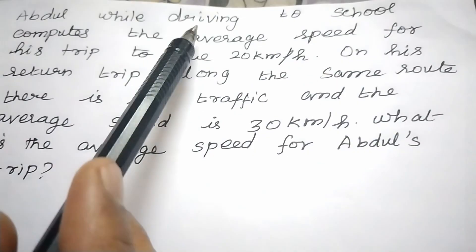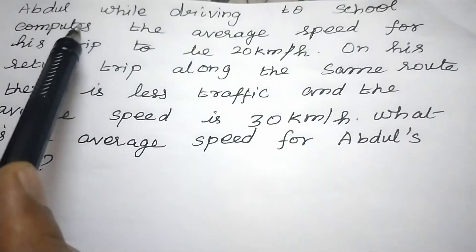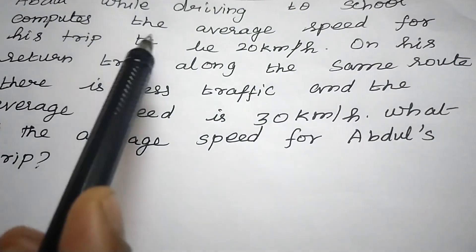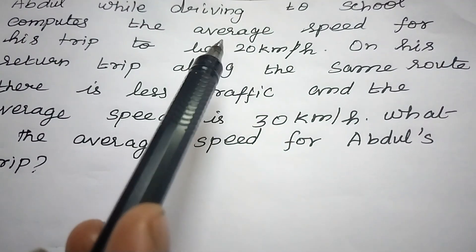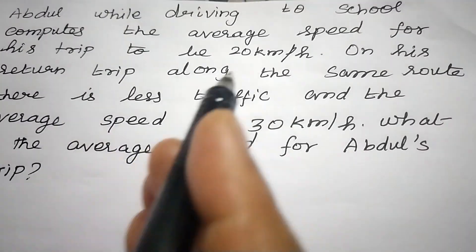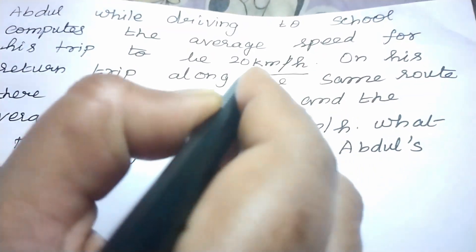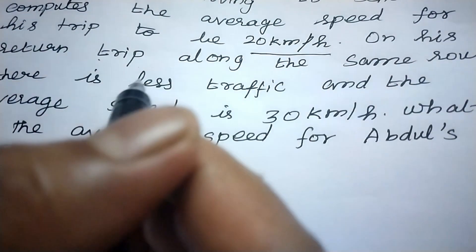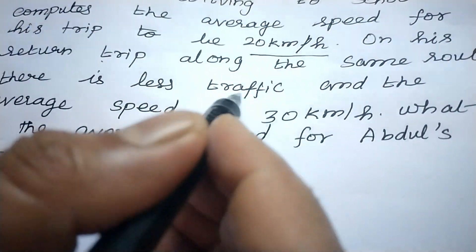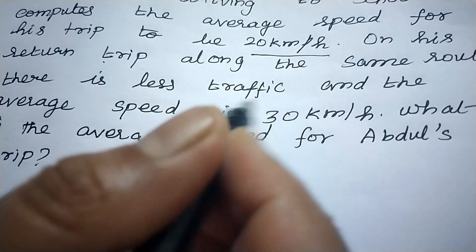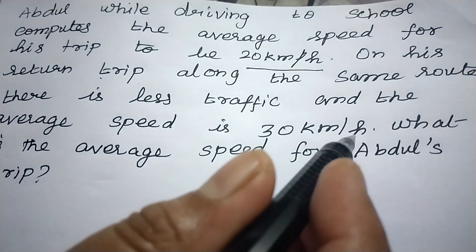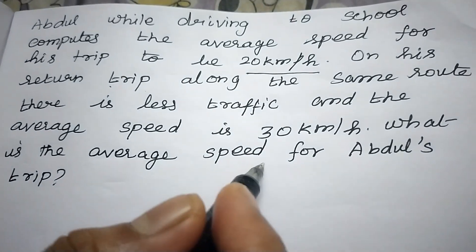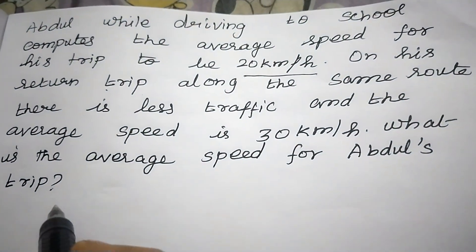Abdul while driving to school computes the average speed of his trip to be 20 km per hour. On his return trip along the same route there is less traffic and the average speed is 30 km per hour. So what is the average speed for Abdul's trip?